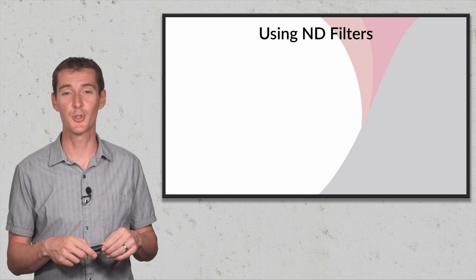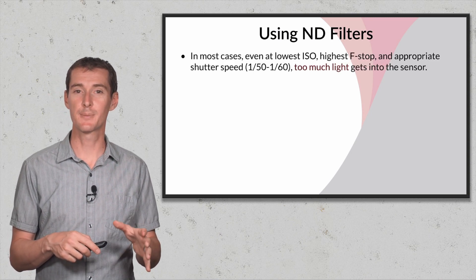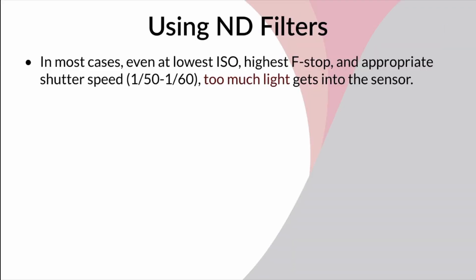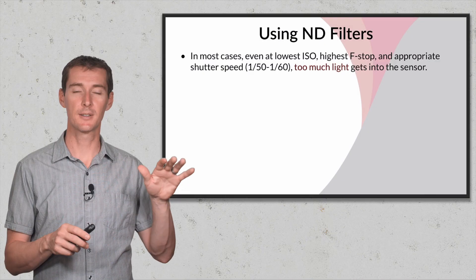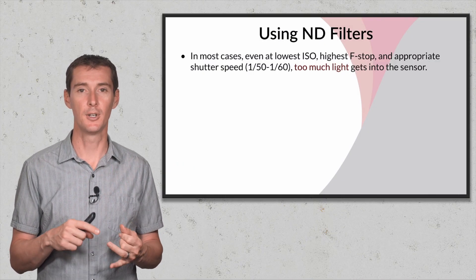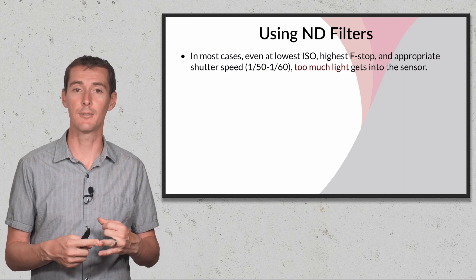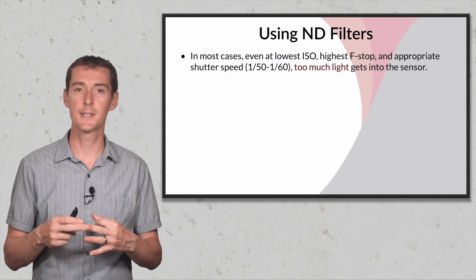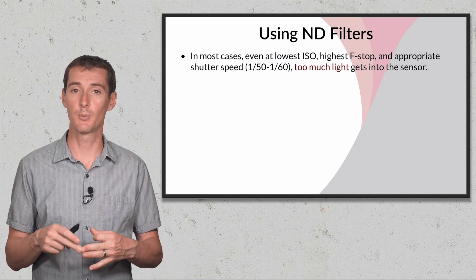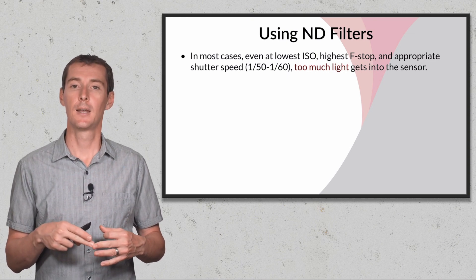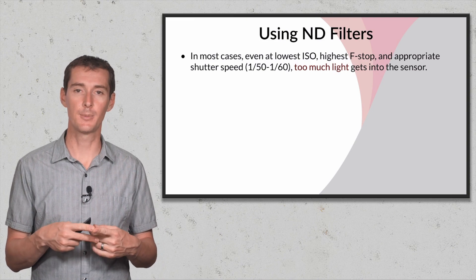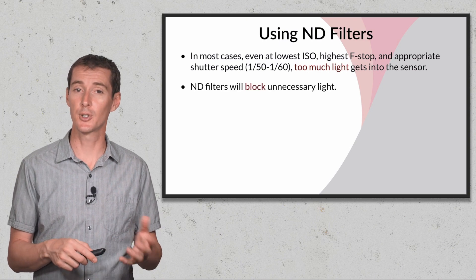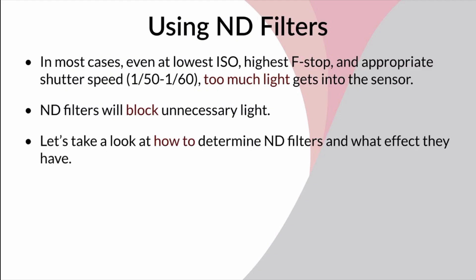I've talked about ND filters and I told you I was going to show you how they work. First let's make sure we understand why we use them. In most cases, even with the lowest possible ISO, do this with your drone — put it outside, go to the lowest possible ISO, go to the highest f-stop you can have, f11 or f22, and then select the proper shutter speed associated with your frame rate, 1/50 or 1/60. Chances are it's going to be way too much light, so you need to reduce the amount of light. There's nothing else you can change to reduce the light, so you're going to have to use an ND filter to block all that unnecessary light.